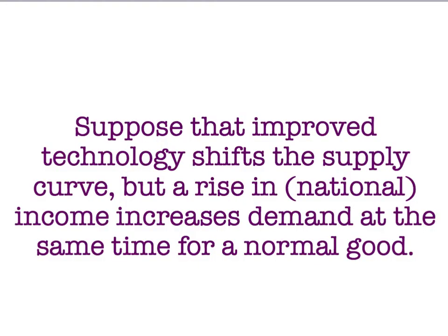So, in our first example of a multiple change, we had an unambiguous increase in price, but an ambiguous change in quantity. It's easy to get the reverse situation. For example, let's look at a different pair of changes. Let's assume that we still have the rise in national income, so demand is still going to shift to the right. But now, let's suppose that's accompanied by improved technology. That's going to make it easier or cheaper to produce the product, so that's going to shift our supply curve to the right as well. So, we're going to have a rightward shift in demand and a rightward shift in supply. What happens?